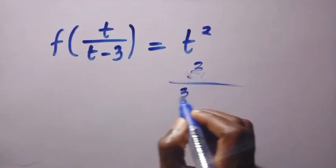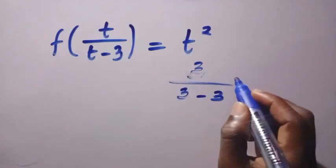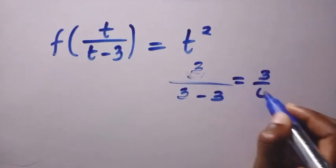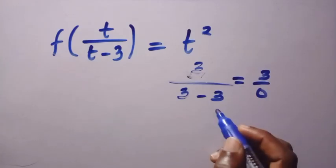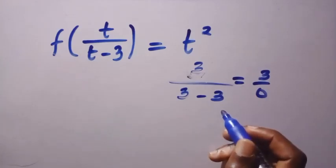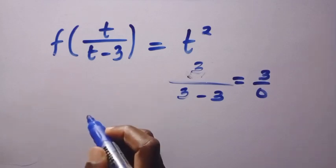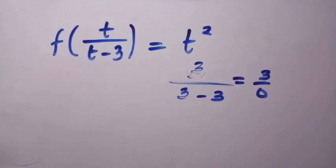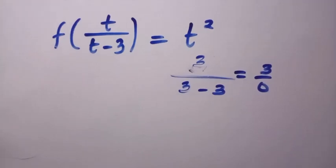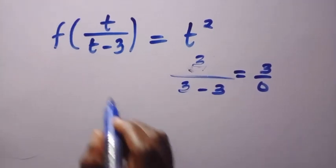3 divided by 3 minus 3, and this equals 3 divided by 0, which gives us undefined. That is, t equals 3 is not part of this domain. And let's see how we can find f of t minus 1.